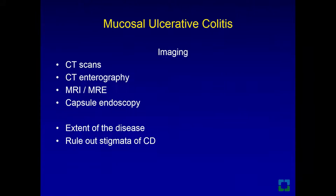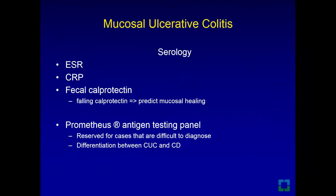Imaging in the workup of ulcerative colitis includes CT scans, CT enterography, MR enterography, and capsule endoscopy. There is overlap between the workup for UC and Crohn's disease because we want to make a precise diagnosis, identify the extent of disease, and rule out stigmata of Crohn's disease. Serology workup includes ESR, C-reactive protein, and fecal calprotectin — a measure of colonic mucosal macrophage activity that may predict and follow the trajectory of disease flares.